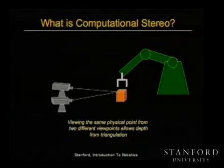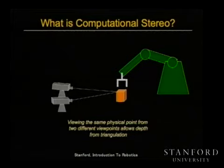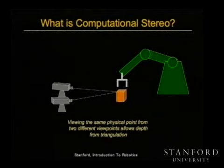What is computational stereo? Quite simply, it's a phenomenon you're all familiar with. If you have two light-sensing devices — eyes or cameras — and you view the same physical point in space with a physical separation between those viewpoints, you can solve a triangulation problem. You can determine how far something is from the sensors by finding this point in both images and simply solving geometric triangulation.